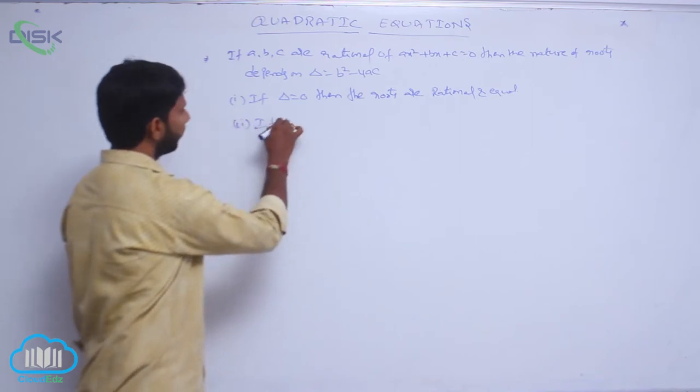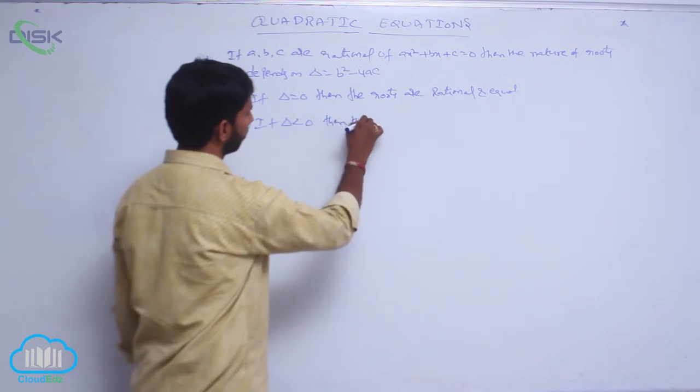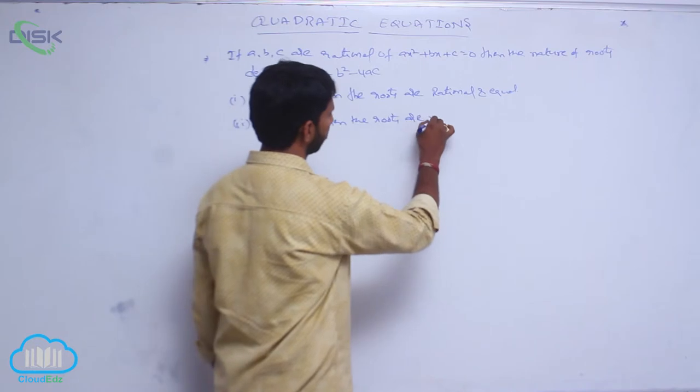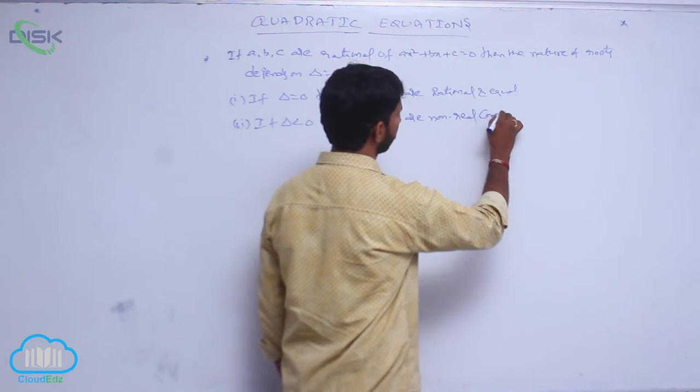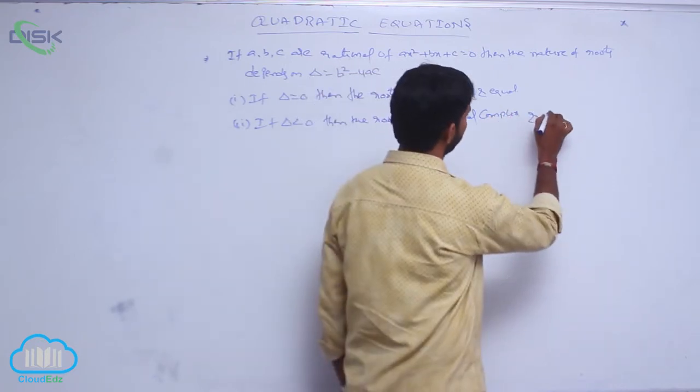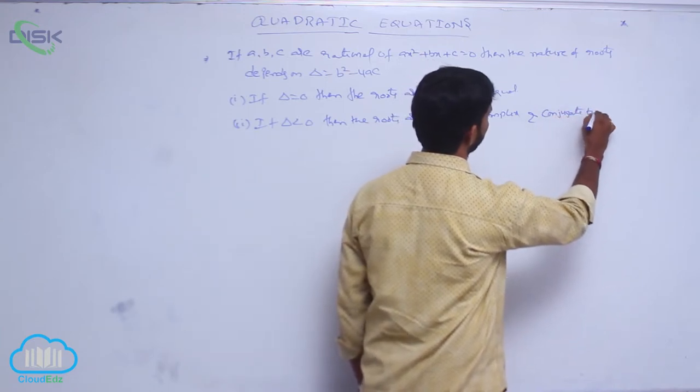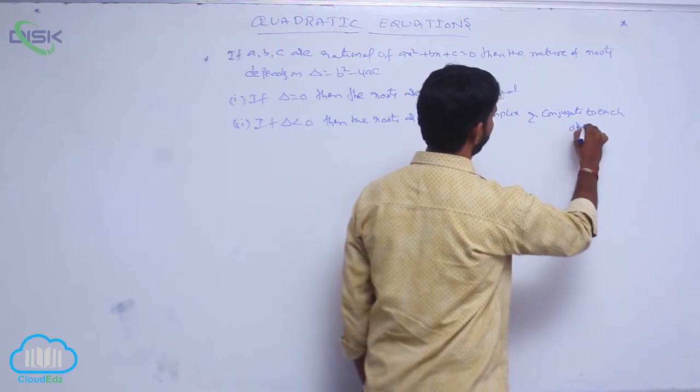Suppose if delta is less than 0, then the roots are non-real complex and conjugate to each other.